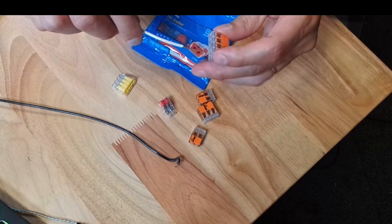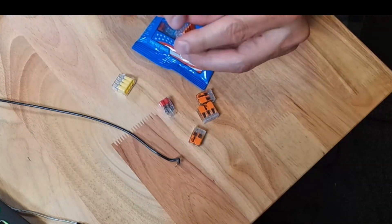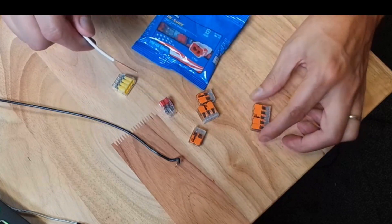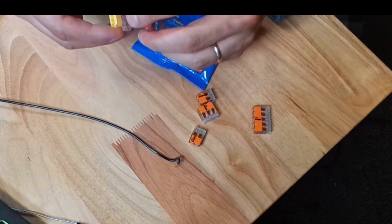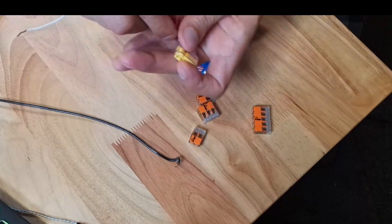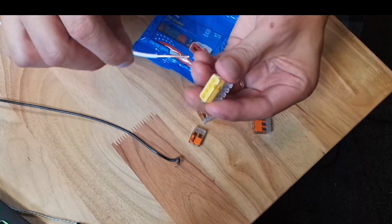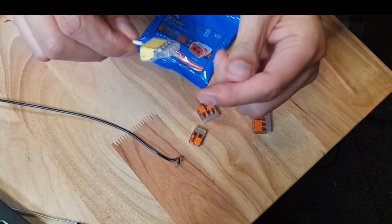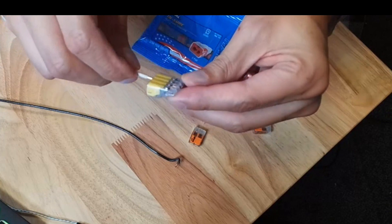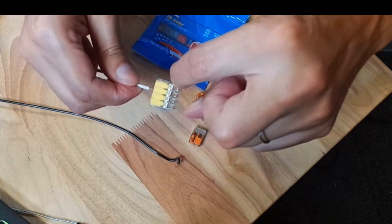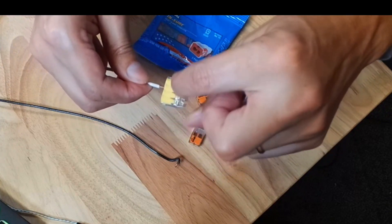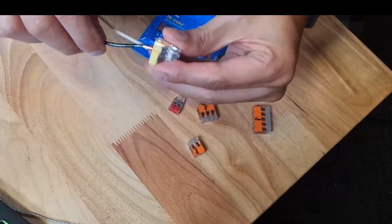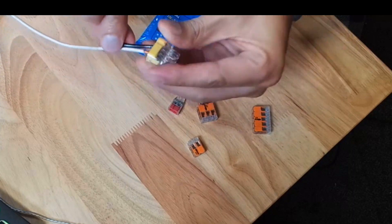So ease of use, temporary circuits, testing circuits, experimenting - you can easily swap back and forth. Now the Ideal does not have the levers, but they're still so easy to use for DIY work. When you push it in, you can see it's reached the bottom of the clear housing. There's a solid metal bar that makes the connection. Those are good solid connections.